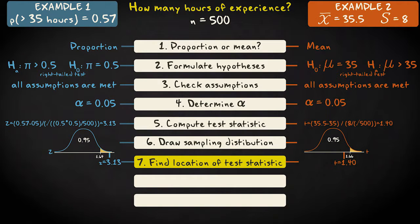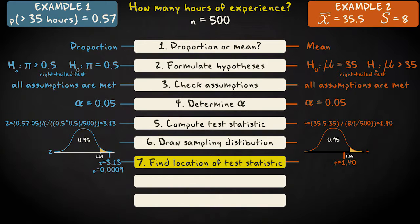Note that in the case of a proportion, you can also look up the p-value in the z-table. The p-value is the probability that our test statistic takes a value like the observed test statistic, or even more extreme, given the null hypothesis. Our test statistic is 3.13 and the corresponding p-value is 0.0009, which is much smaller than 0.05 — meaning our test statistic is located in the rejection region.